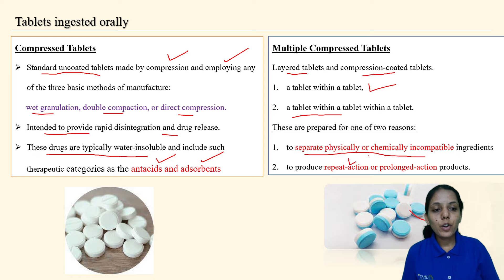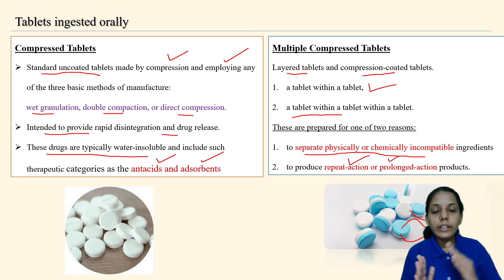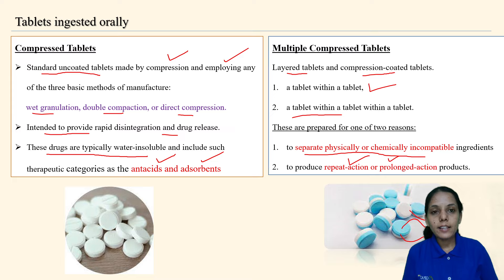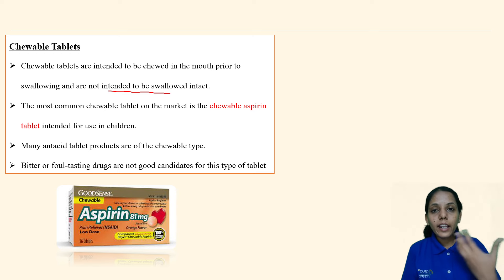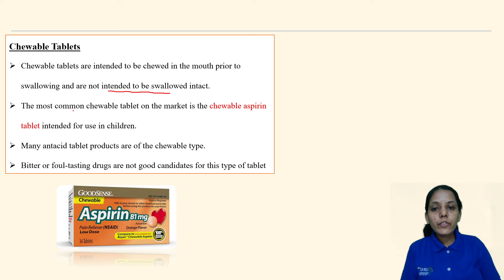Multiple compressed tablets can also produce repeat action or prolonged action — one drug releases first, and after its completion the second drug releases, giving delayed or prolonged action. Chewable tablets, as the name suggests, are intended to be chewed in the mouth prior to swallowing and are not intended to be swallowed intact. The most common chewable tablet on the market is the chewable aspirin tablet.